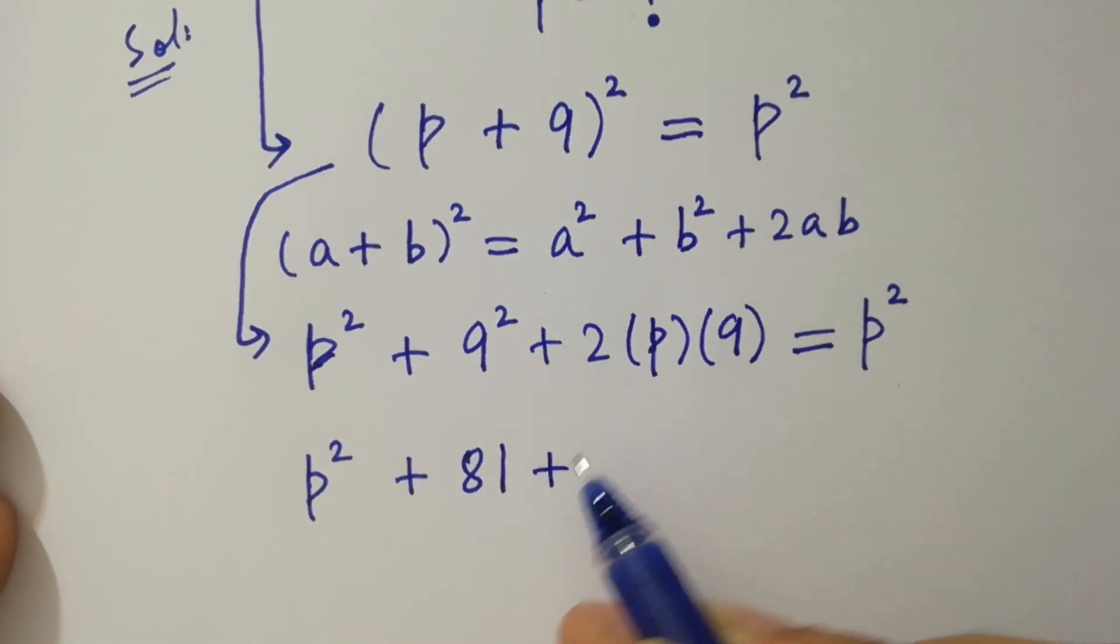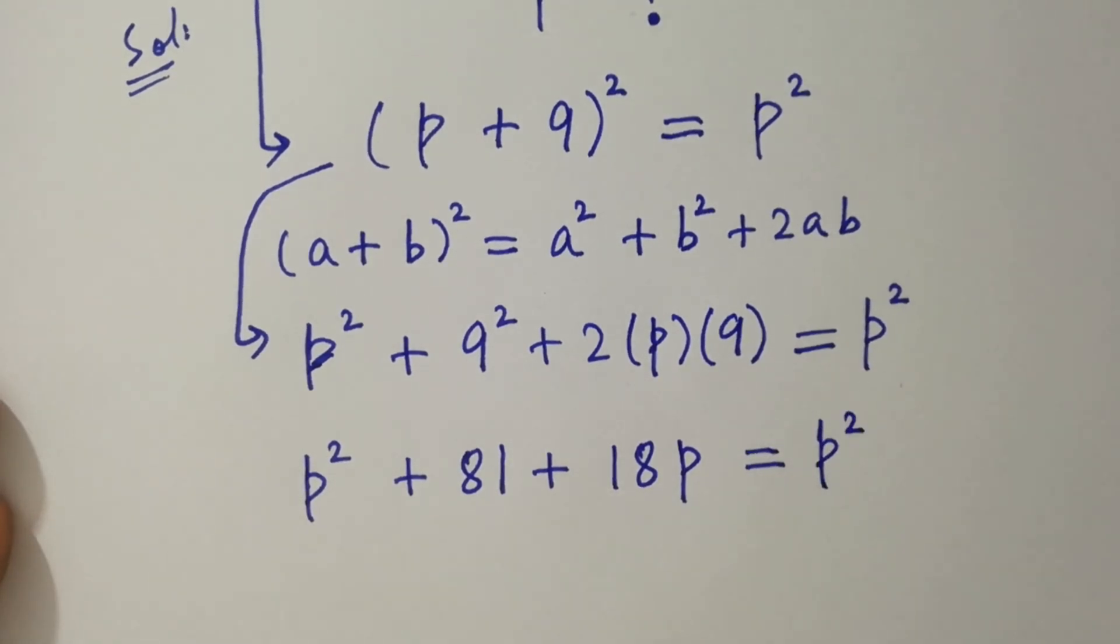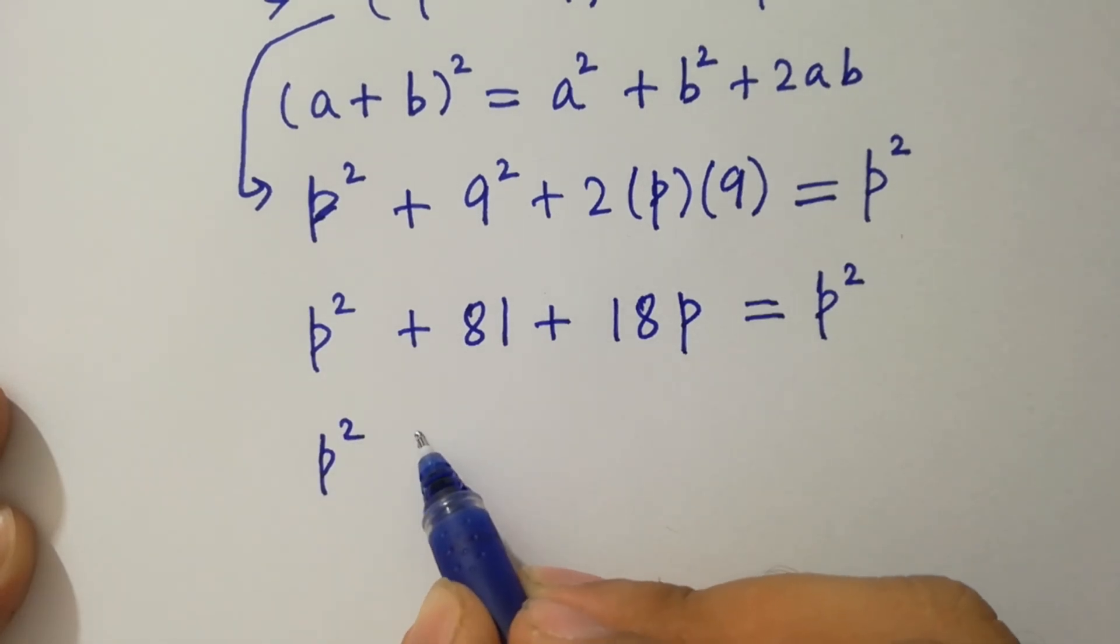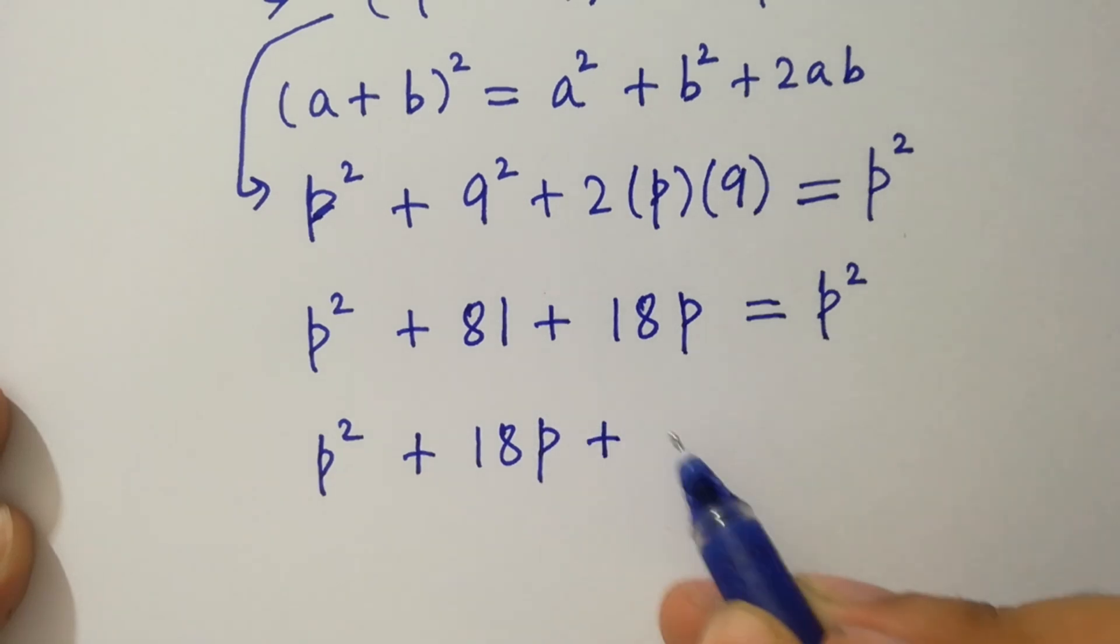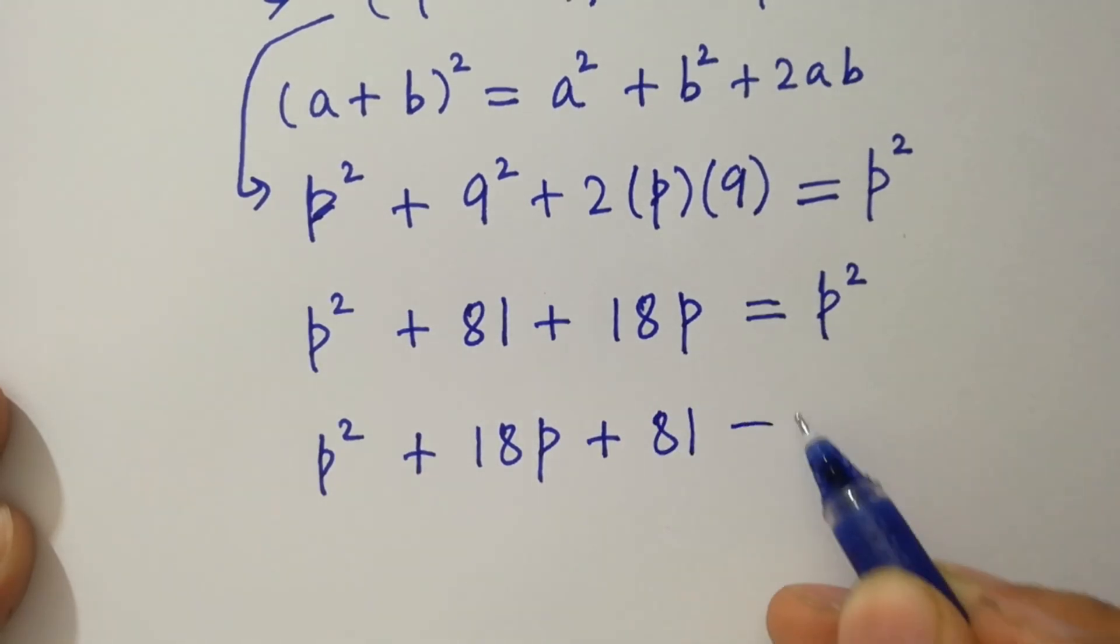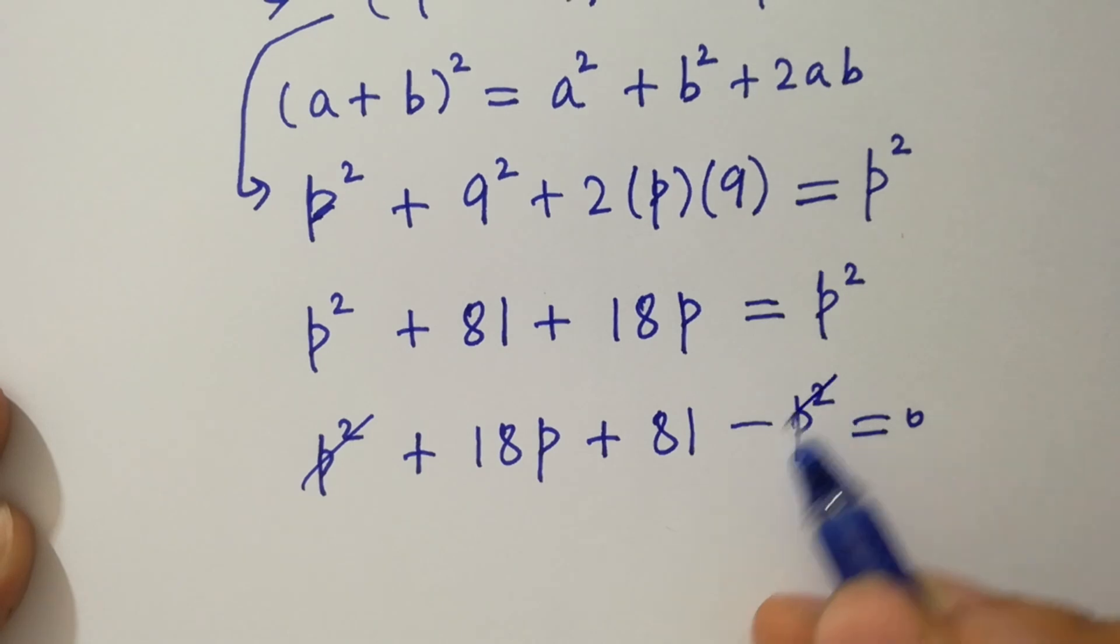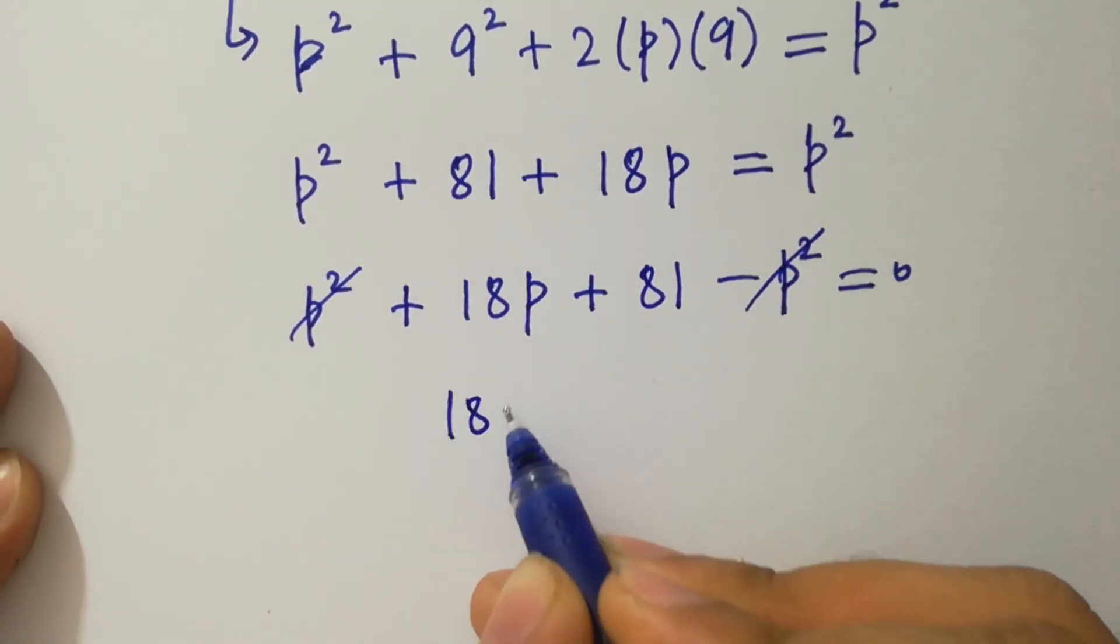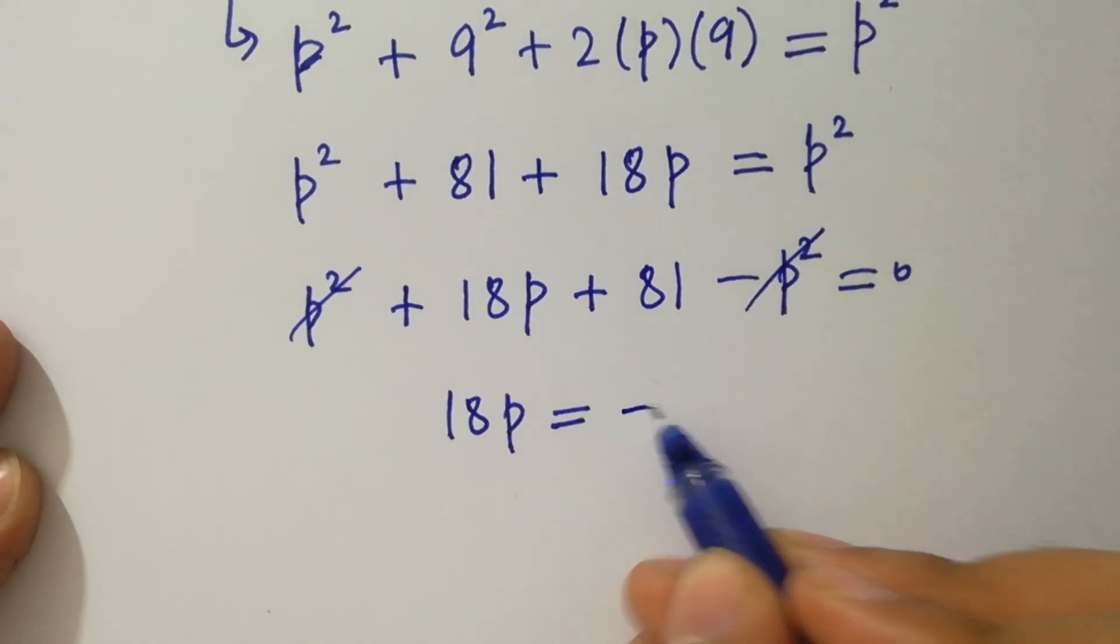Plus 2 times 9 is 18p equals p squared. Plus 18p plus 81 minus p squared equals 0. Where p squared and p squared cancels, it will be 18p equals plus 81, or right hand side will be minus 81.